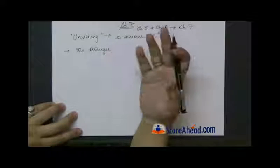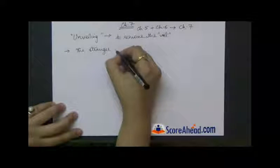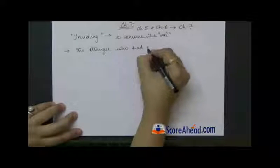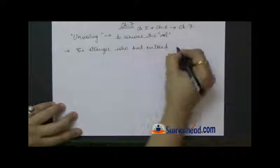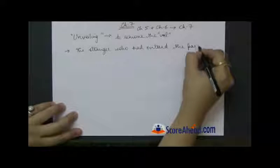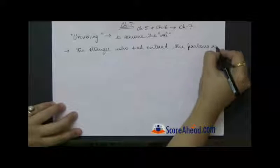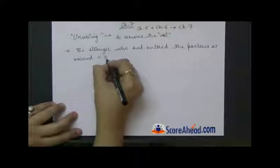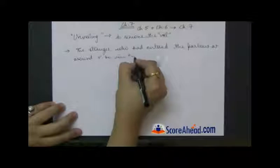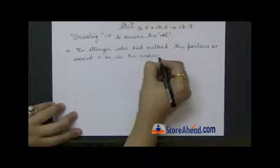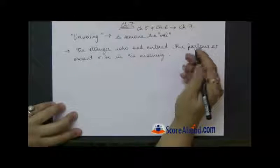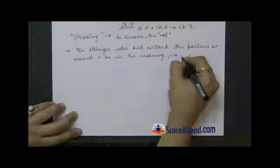In this chapter, the stranger who had entered the parlor at around 5:30 in the morning and has remained over there throughout the day, he comes out at noon.